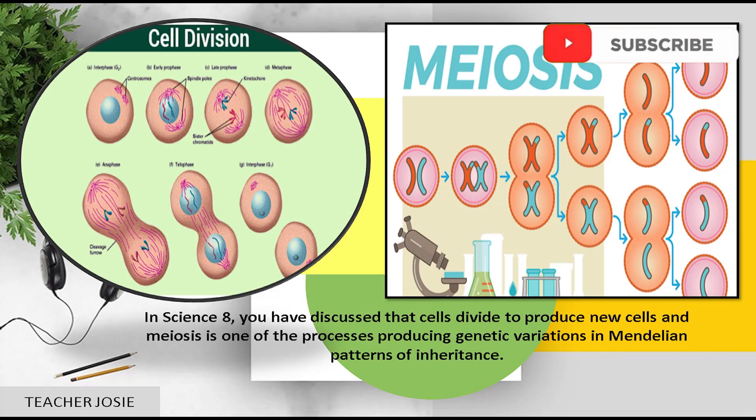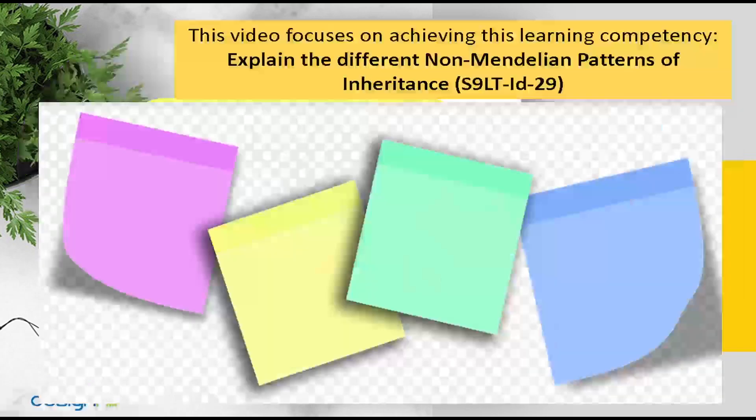In Science 8, you have discussed that cells divide to produce new cells, and meiosis is one of the processes during genetic variations in Mendelian patterns of inheritance.